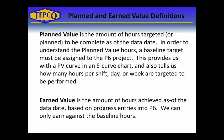Planned Value is the amount of hours targeted or planned to be complete as of the data date. In order to understand the Planned Value hours, a baseline target must be assigned to the P6 project. This provides us with a Planned Value curve in an S-curve chart and also tells us how many hours per shift, day, or week are targeted to be performed. Earned Value is the amount of hours achieved as of the data date based on progress entries into P6. We can only earn against baseline hours.